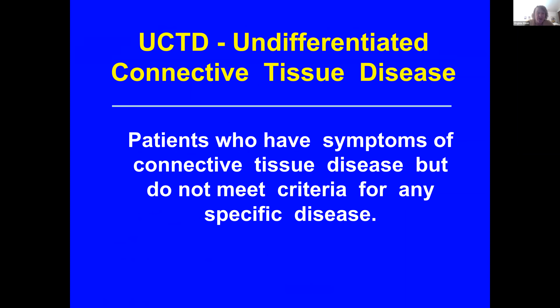Undifferentiated connective tissue disease are patients who have symptoms of connective tissue disease but really don't meet any of the specific criteria. They may have features of scleroderma, lupus, rheumatoid arthritis, or myositis, but they don't fulfill all the criteria. Rather than calling them lupus or scleroderma until they sort of declare themselves, it's easier to keep an open mind and just call them undifferentiated connective tissue disease.